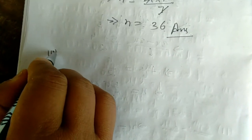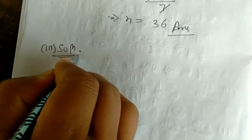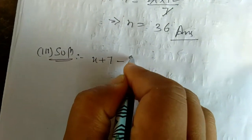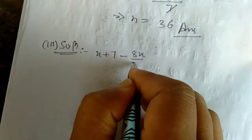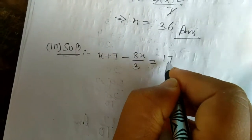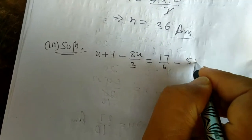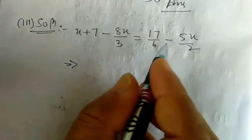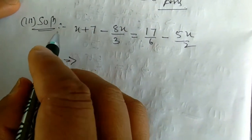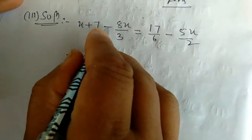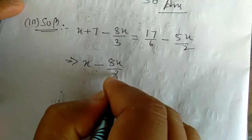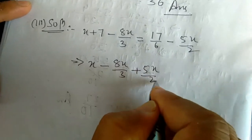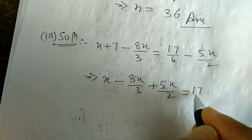Now question number 3. It is: x + 7 - 8x/3 = 17/6 - 5x/2. While solving an equation, remember: all variables go to the left side, constants transfer to the right side. So x - 8x/3, and bringing 5x/2 from the right to the left becomes positive 5x/2. Equal to 17/6, and transferring 7 to the right it becomes minus 7.